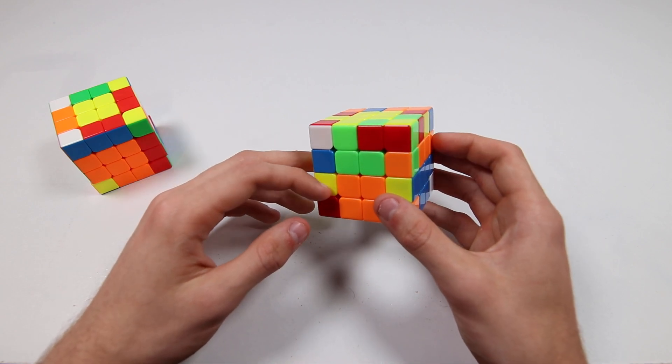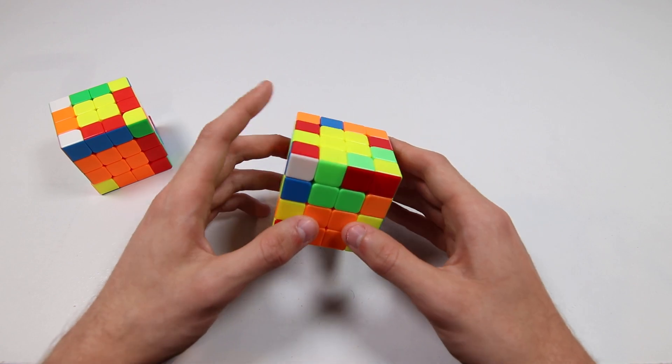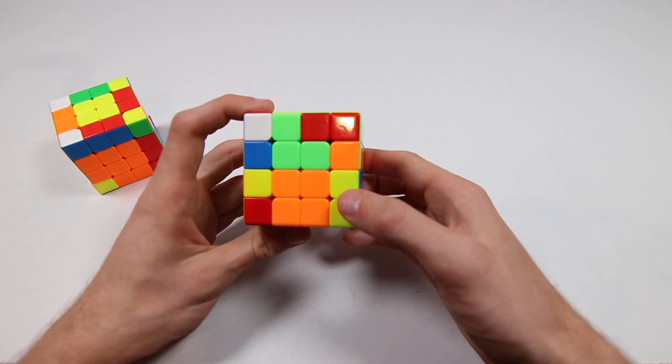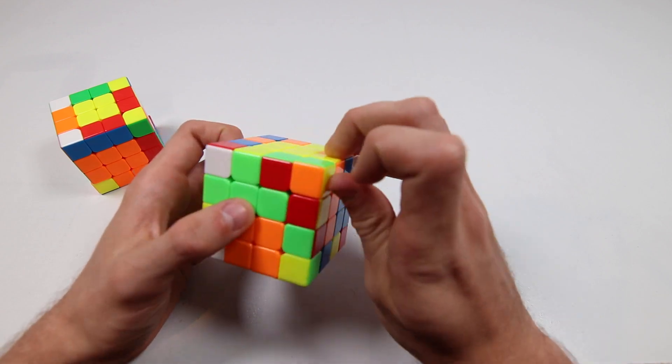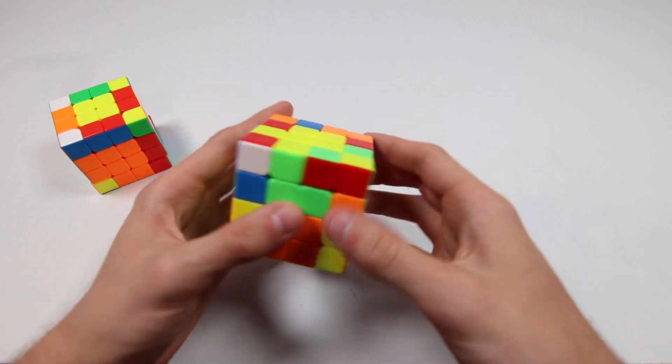I wouldn't really recommend doing the five mover, I think a more finger trick friendly way to get this edge to here, like this. We'd be doing something like r'f, r2u', r2'f'r, like that.